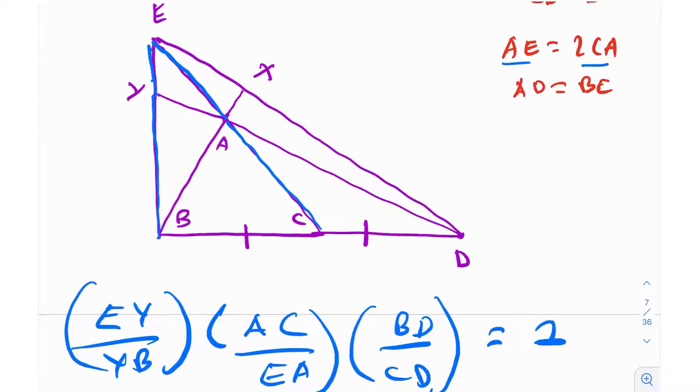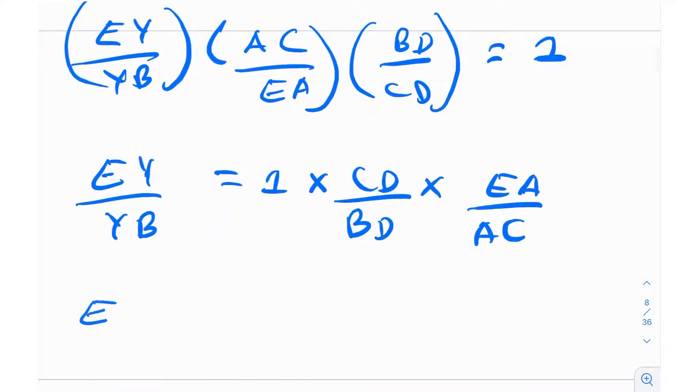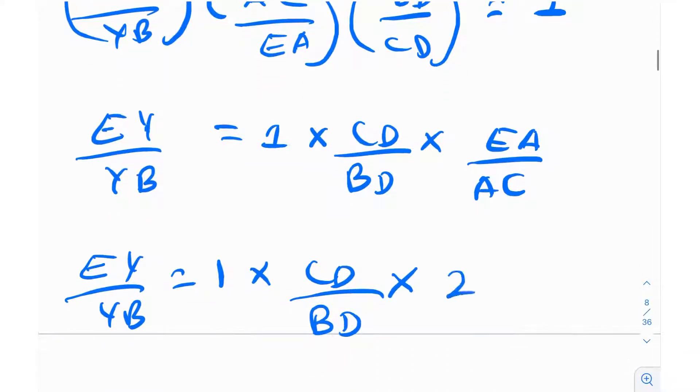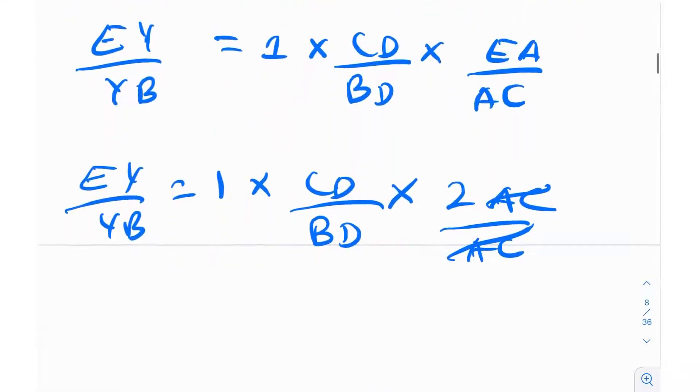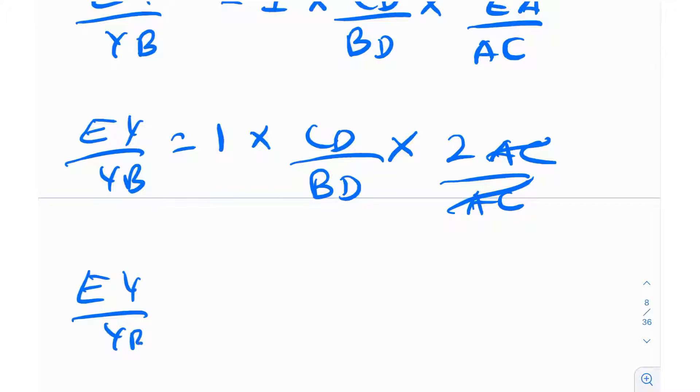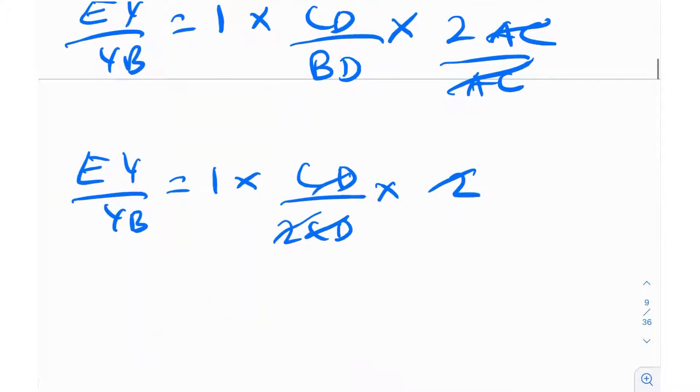It's given to me that AE is twice of CA, so if I can just plug that in, so EY by YB is equal to 1 times CD by BD times AE is twice of AC divided by AC, so that just gets cancelled. Now I also know that this point C is the midpoint of BD, in other words BC is equal to CD. BC is equal to CD, in other words BD is equal to twice of CD because BD is the entire length. So BD is equal to twice of CD. In other words, I can write EY by YB is equal to 1 times CD divided by twice of CD times 2, so this 2 and 2 also gets cancelled, so EY by YB is 1, in other words EY is equal to YB.